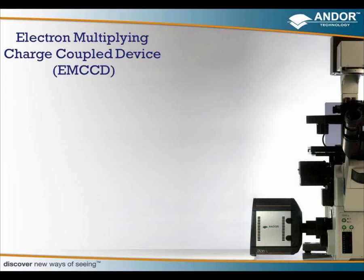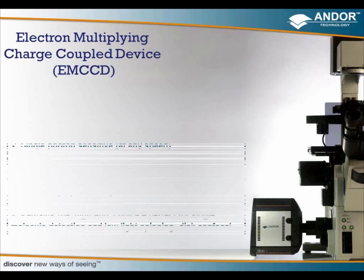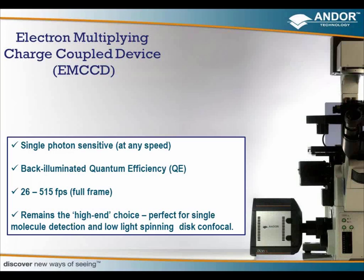Electron-multiplying charge-coupled devices, or EMCCD cameras, are single-photon sensitive at any speed — they're extremely sensitive. If you have one single photon in your sample, these cameras will be able to see it. They're back-illuminated and therefore have a very high quantum efficiency, generally above 90–95% in the visible region. There's a variety of different sensors available in the EMCCD range — very large sensors running at 26 frames per second, or very small sensors running at 515 frames per second. Depending on your application, you can choose whichever sensor suits you best.